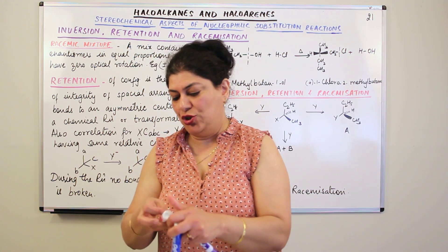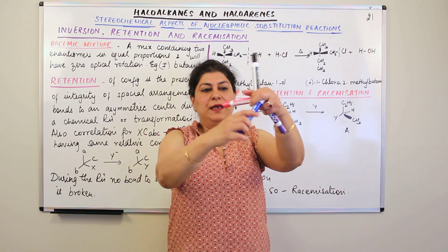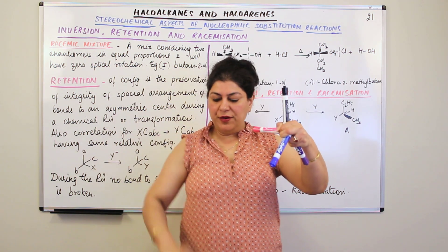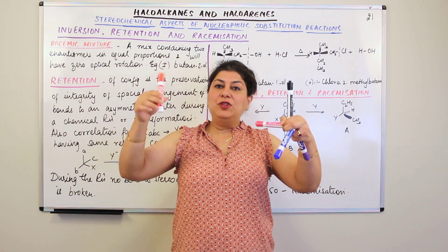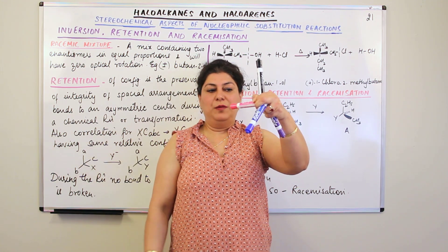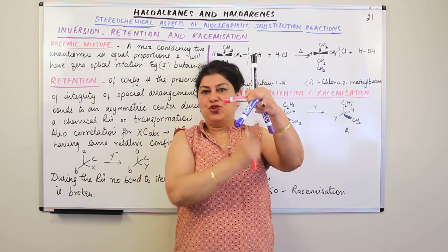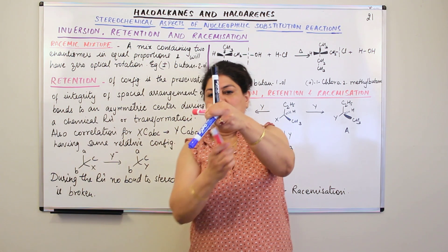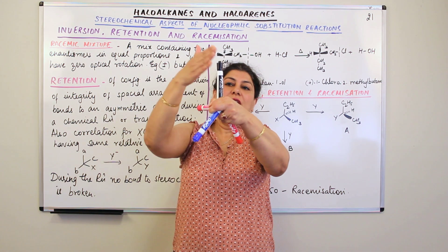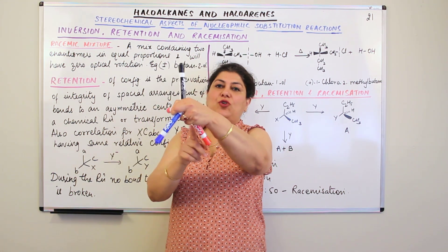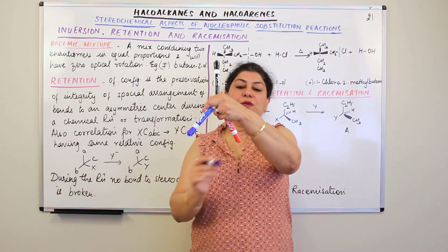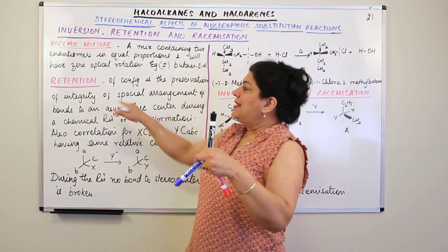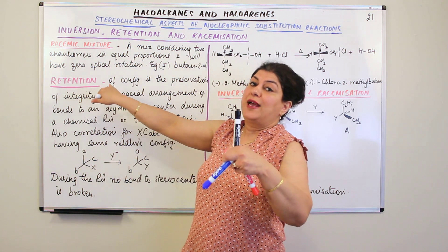Let me explain with an example. This tetrahedral molecule has four different species attached: blue, pink, black, and purple. A reaction takes place where another species is supposed to replace the purple one. As the reaction takes place, the purple species is removed and the red pen takes its place at the same position. None of the bond angles are disturbed — only that one component was replaced. So the reaction has taken place, but the configuration has been preserved. Since it has been preserved or retained, this is known as retention of configuration.